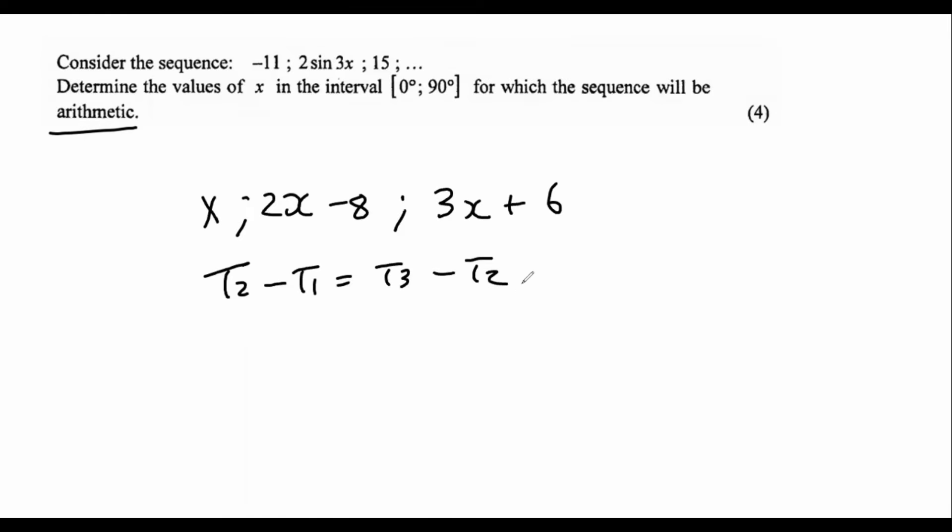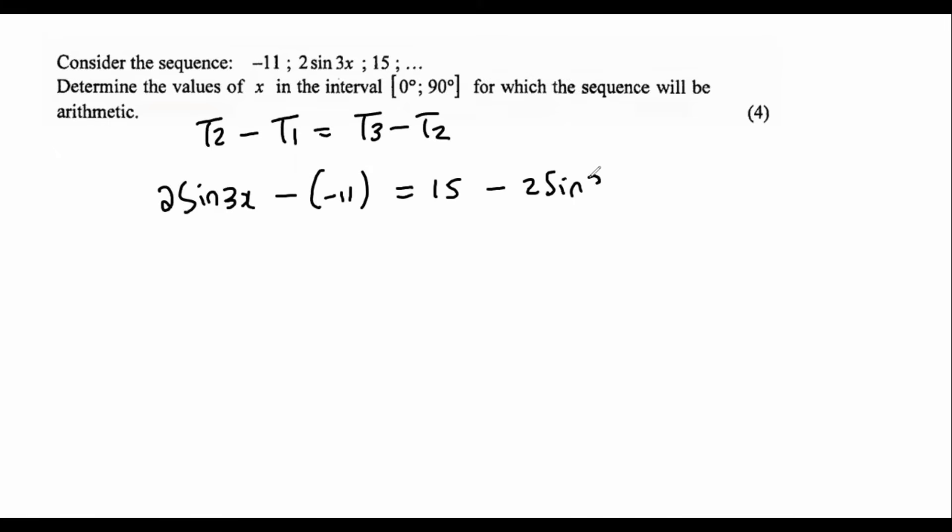Here they have told us that it is arithmetic, so I'm going to use the same approach. We're going to say term 2 minus term 1 must be the same as term 3 minus term 2, that's because that's arithmetic. So term 2 is going to be 2 sin 3x minus term 1 which is minus 11, and that's equal to term 3 minus term 2.